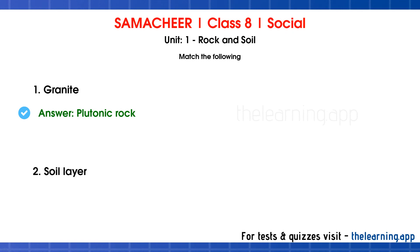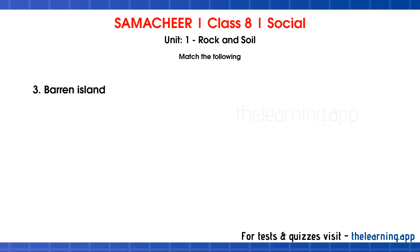Second question: Soil layer — this is the bedrock. Soil has six types of layers and the bottom is the bedrock layer. Third question: Barren Island — this is an active volcano.